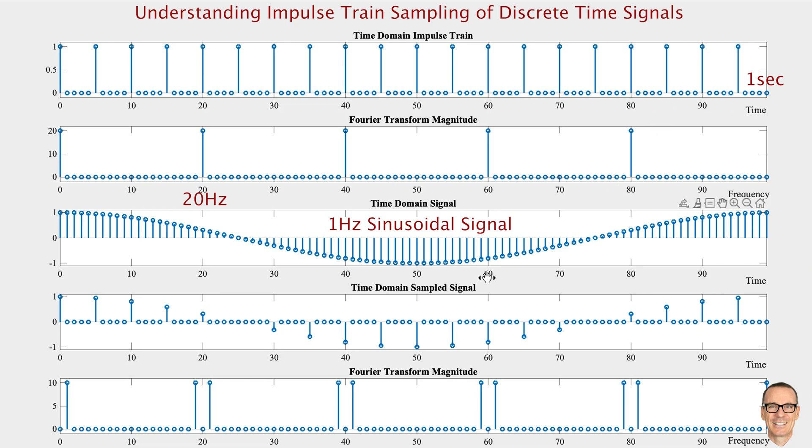Now I'm showing this sampled function. At the top, the top two are the same. It's our impulse train that we're using for sampling, and its Fourier transform. Here's the signal. Now I'm showing the sampled signal. This is the result of multiplying the top function with the third function. What happens in the frequency domain? Well, it's what we expected. We now see the cos, two delta functions from the cos function appearing at each of the locations of our Fourier transform of our impulse train. So around 20, around 40, 60, and 80.